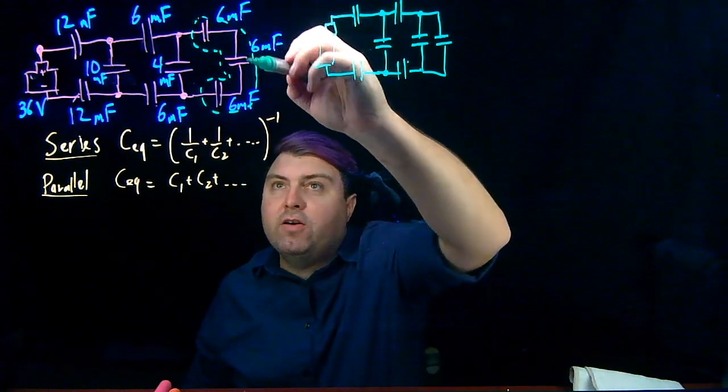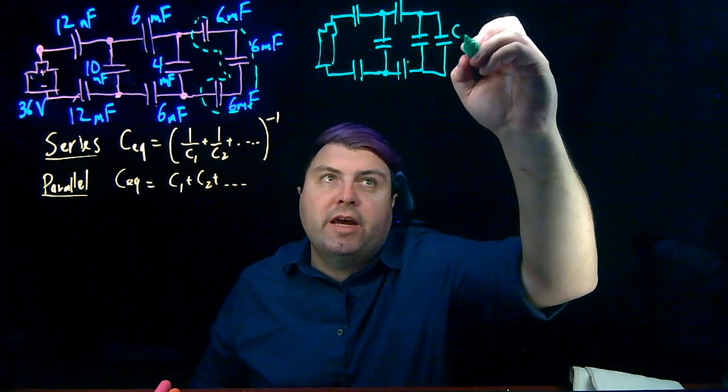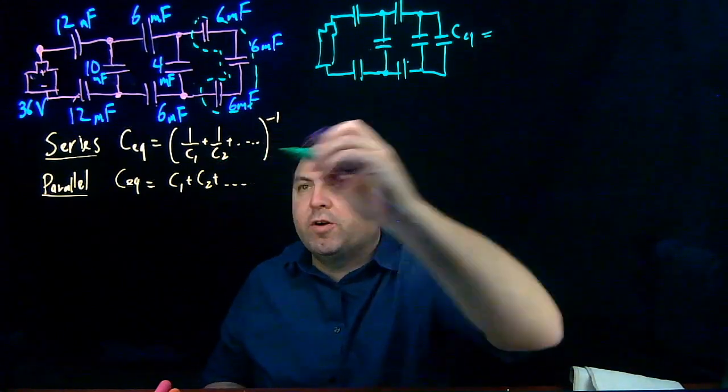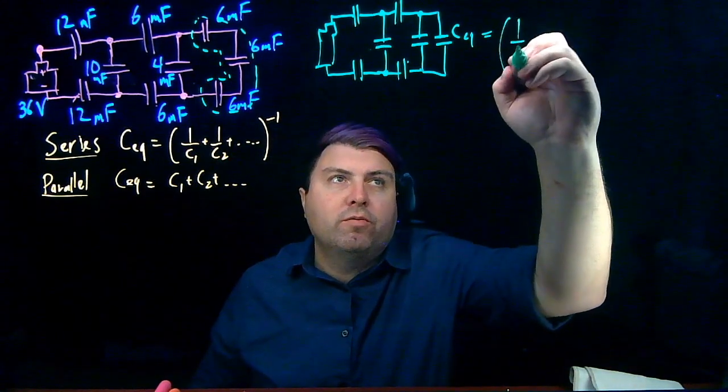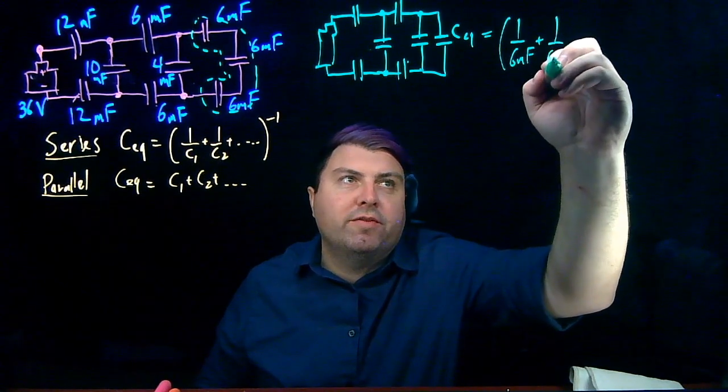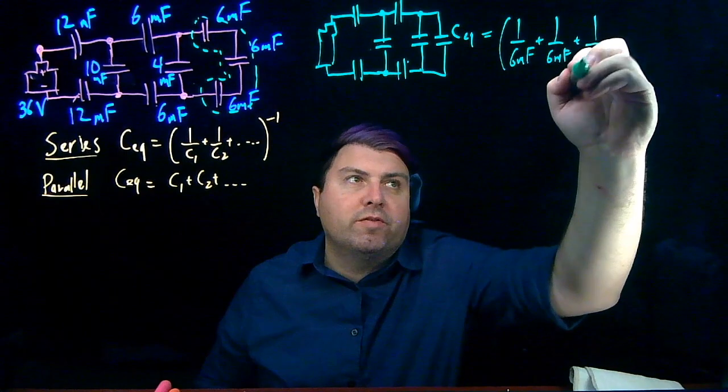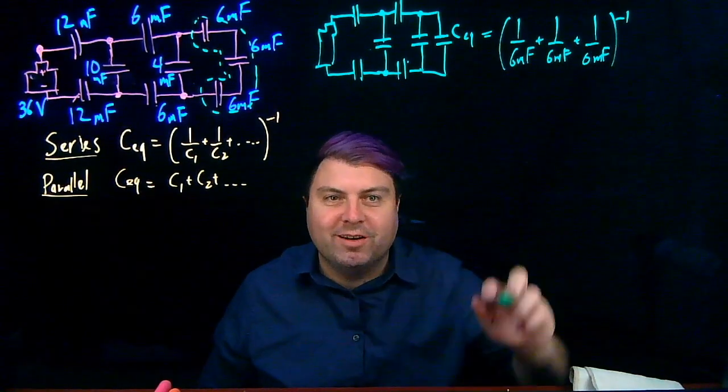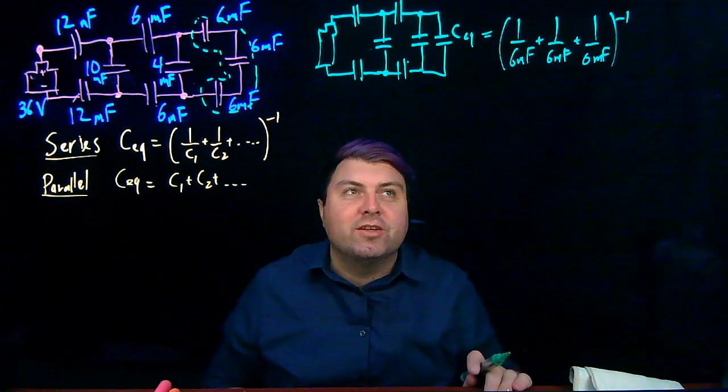We're saying that all three of these can be written as just this one equivalent capacitor, which we know from our rules is going to be 1 over 6 millifarads plus 1 over 6 millifarads plus 1 over 6 millifarads. And then we need to take it to the minus 1.